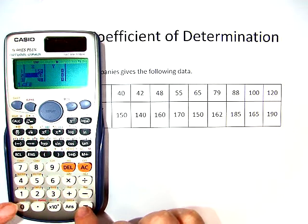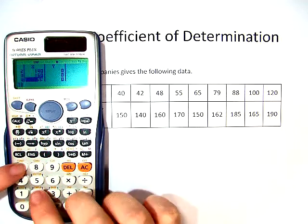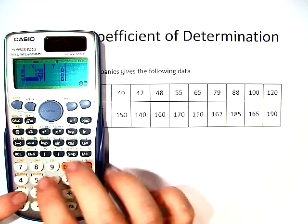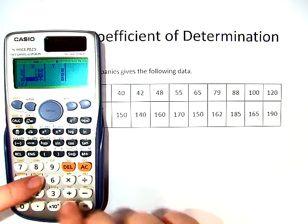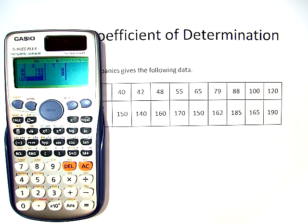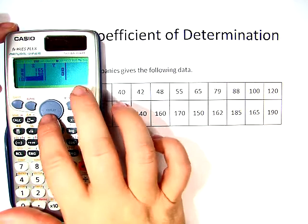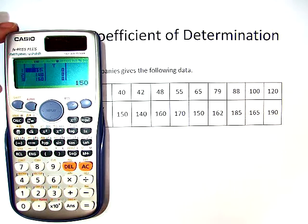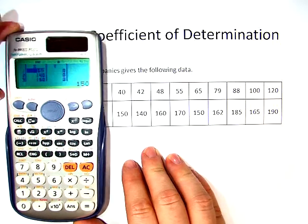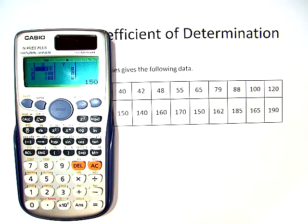150, 140, 160, 170, 150, 162, 185, 165, 190. What did I do wrong? Where was my mistake? I never moved over. So let's go ahead and put the data in again. This happens, and don't be discouraged when it does. If this type of thing happens, just go back and correct your mistake and move on.